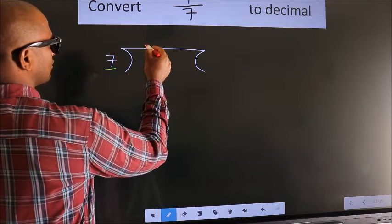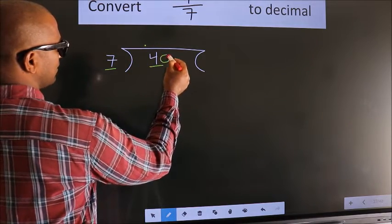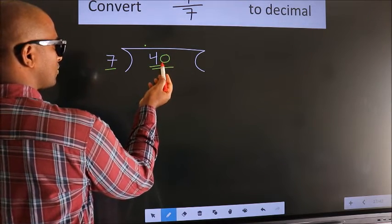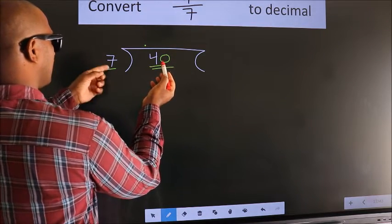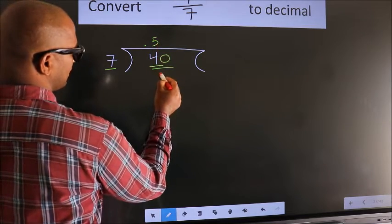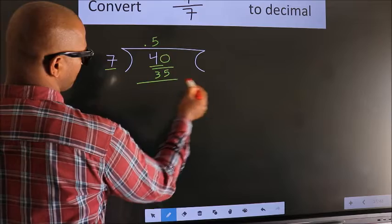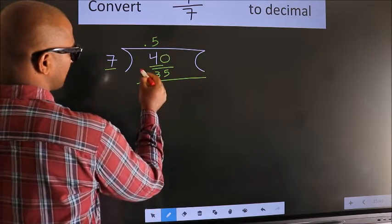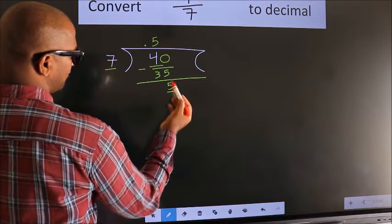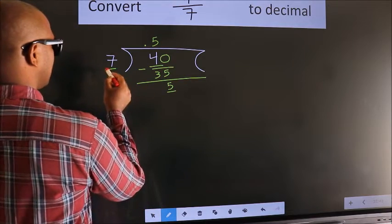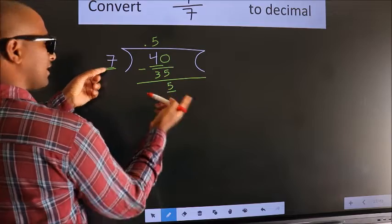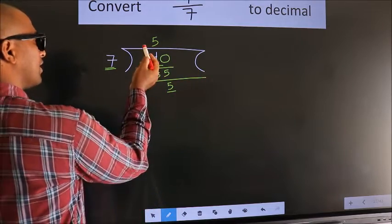We put a dot here and take 0, making it 40. A number close to 40 in the 7 times table is 7 fives, which is 35. Now we subtract and get 5. Here we have 5, and 5 is smaller than 7.